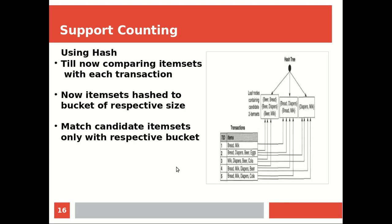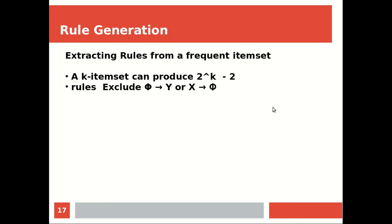پھر ہم نے hashing کی بات کی — آپ نے transactions کو item sets سے hash کر دیا۔ جب hash buckets میں map کر دوگے تو same item set اگر کسی اور transaction میں آرہا ہے تو آپ صرف respective bucket میں جا کے count increase کروگے — سب کو check کرنے کی ضرورت نہیں۔